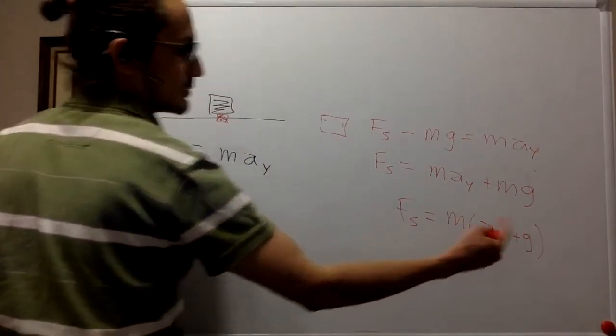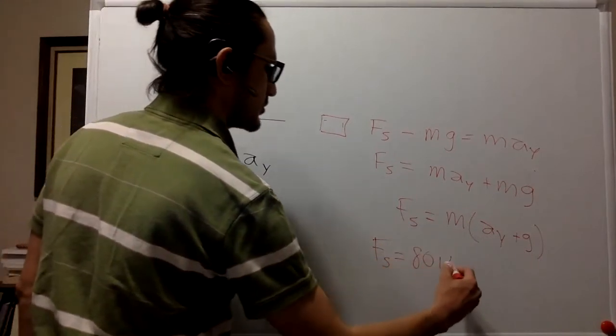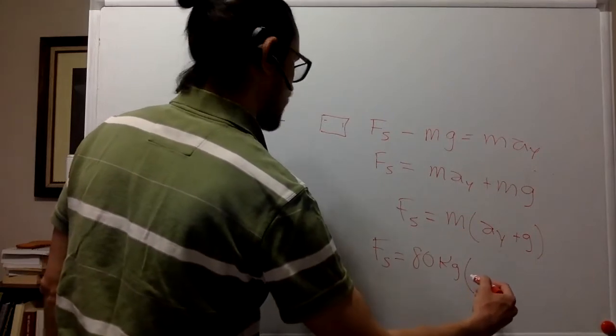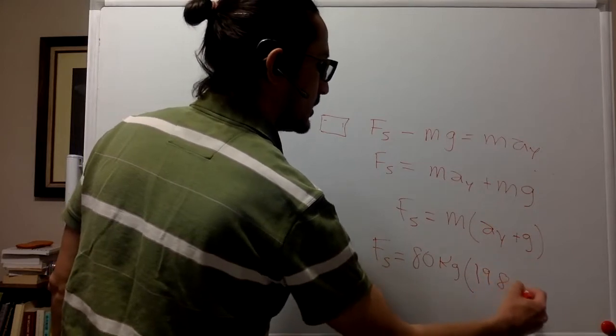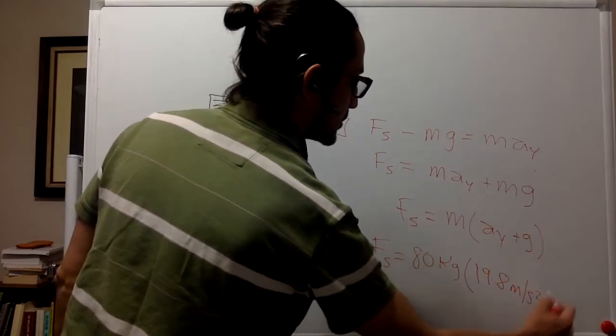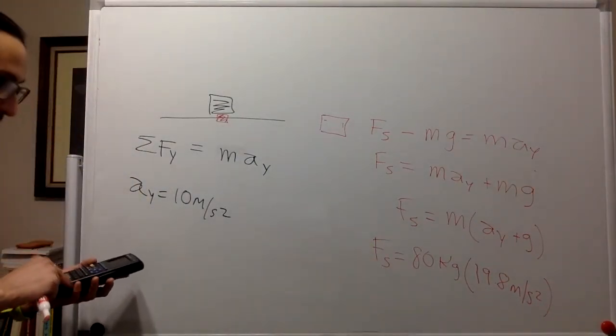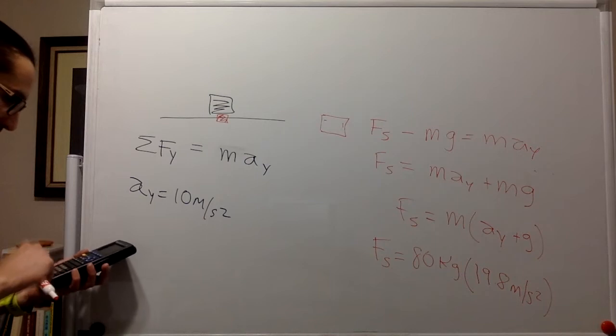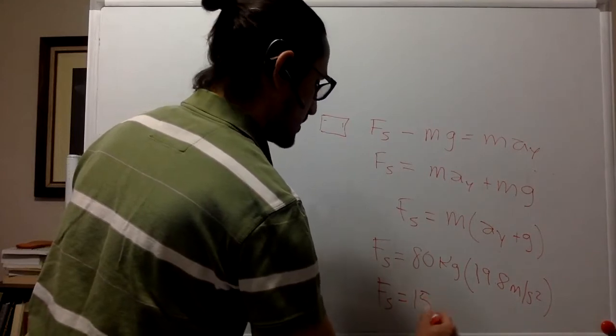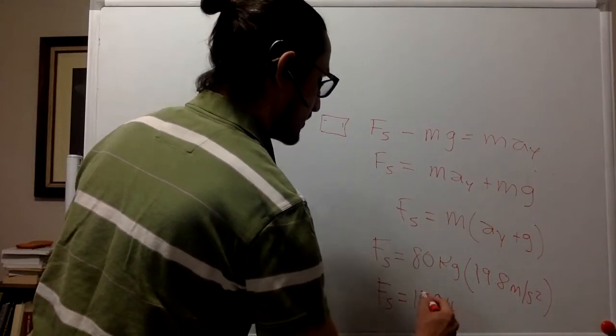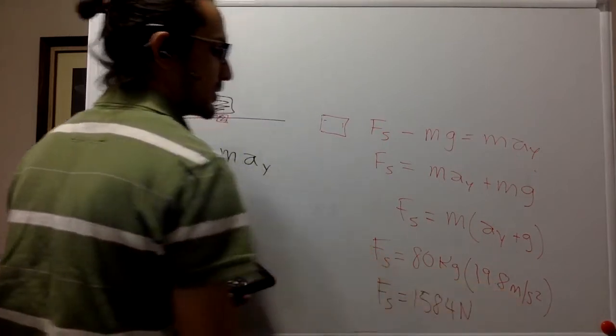This one is 10, this one is 9.8. So the measurement is going to be 80 kilograms times 10 plus 9.8. It's 19.8 meters per second squared. So we multiply 80 times 19.8. And that is equal to 1584 newtons, kilogram times meter per second squared newtons.